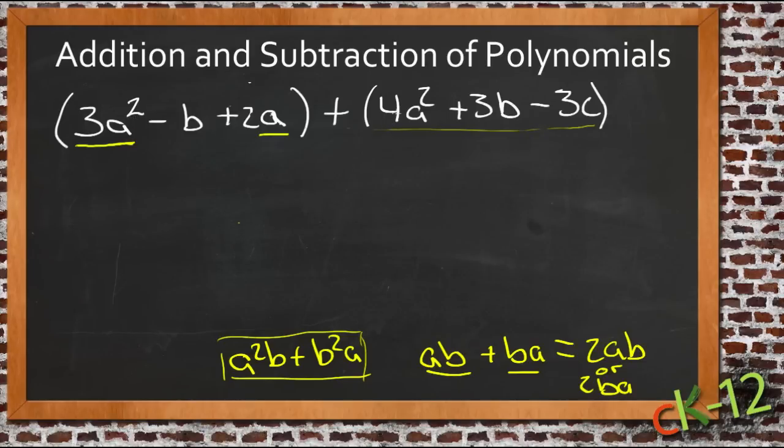And on the right-hand side, we have 4a squared. Well, 3a squared and 4a squared, if we have three of these things, whatever they are, and 4 more of those things, then we have a total of 7 of those things. 7a squared.